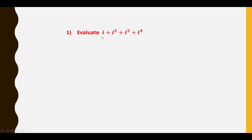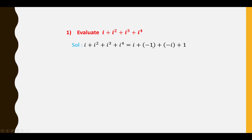First question: Evaluate i + i² + i³ + i⁴. Solution: i + i² + i³ + i⁴ = i + (−1) + (−i) + 1. Therefore we get i − 1 − i + 1. The i terms cancel and the ±1 terms cancel, giving answer 0.